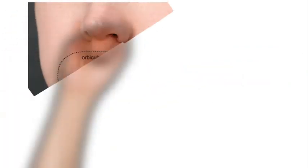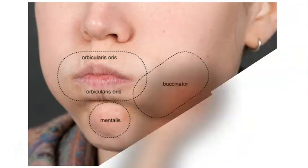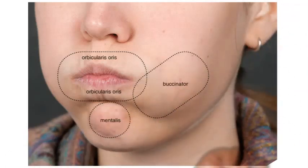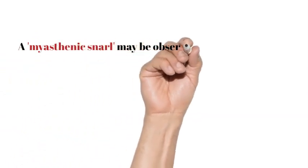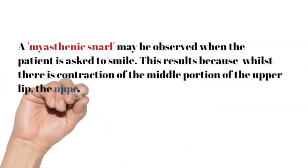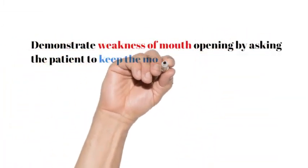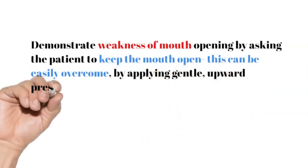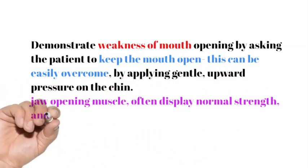When the cheeks are squeezed in severe facial weakness, the lips cannot be easily opposed. A myasthenic snarl may be observed when the patient is asked to smile; this results because whilst there is contraction of the middle portion of the upper lip, the upper mouth corners fail to contract. Demonstrate weakness of mouth opening by asking the patient to keep the mouth open; this can be easily overcome by applying gentle upward pressure on the chin. Jaw opening muscles often display normal strength, and jaw closure muscles are more frequently affected.